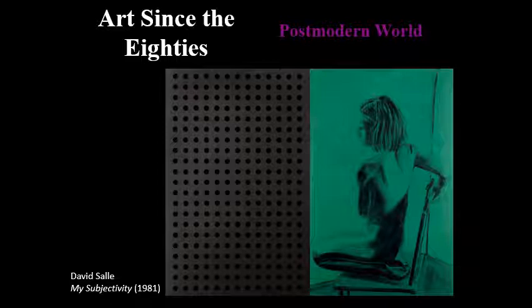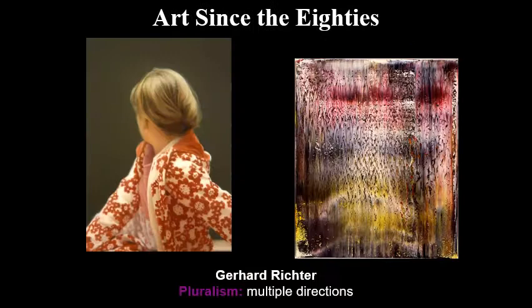Other examples: David Salle, where he often would take two completely different styles of art and sort of merge them together for a single piece. So we have something minimal next to a very figurative type image. And then you also get pluralism — multiple directions. No longer is there any dominant type or style of art.